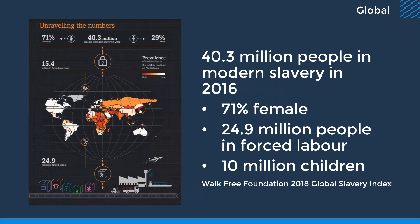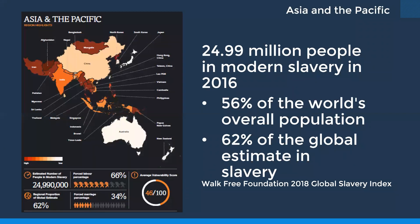In 2018, the Global Slavery Index estimated there are over 40 million victims of modern slavery practices worldwide — and due to the nature of that data, this figure may be on the low side. Of those 40 million people, 71% are female, 24.9 million are in enforced labour, 15.4 million are in enforced marriage, and 10 million are children. In the Asia and Pacific context, 56% of the world's population and 62% of the global estimate of slaves are located here — over 25 million people in slavery. 66% are enforced labour and 34% enforced marriage.